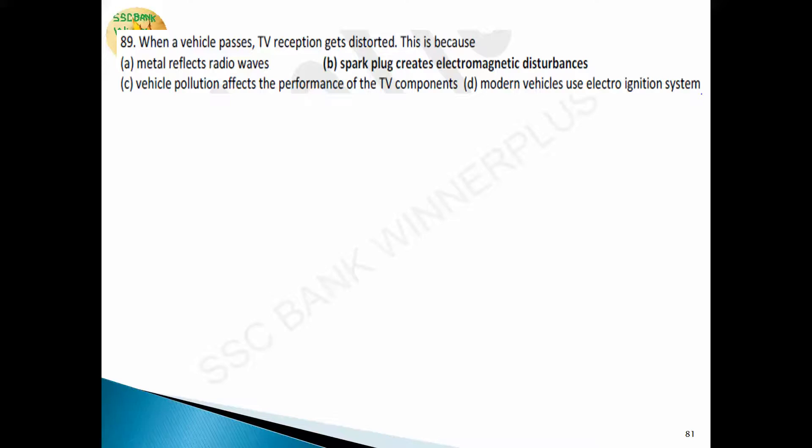Question 89: when a vehicle passes, TV reception gets distorted. This is because the spark plug creates electromagnetic disturbances — option B is the answer.